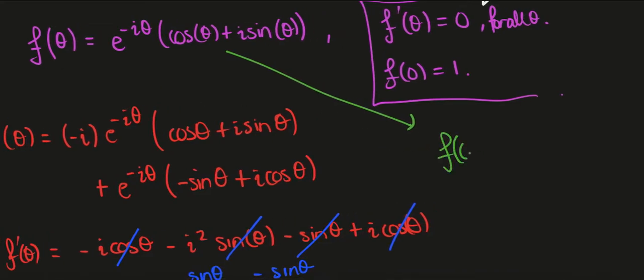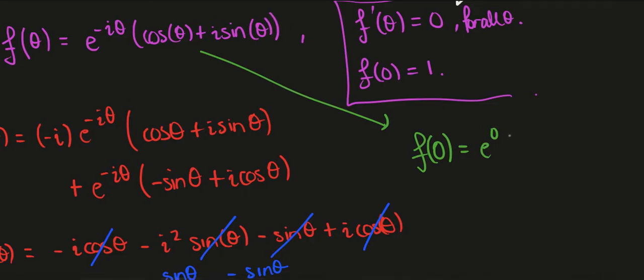so let's do that. So we have f of 0 being e to the minus i times 0, well that's just e to the 0, then cos of 0 plus i sine of 0